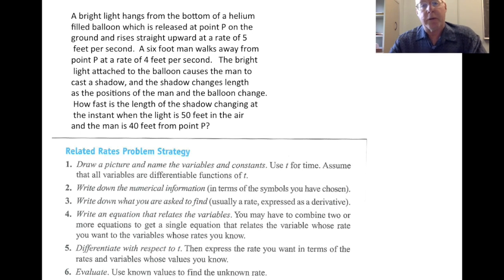So we're going to take a look at the following problem. A bright light hangs from the bottom of a helium-filled balloon, which is released at a point P on the ground and rises straight upward at a rate of 5 feet per second. A 6-foot man walks away from the point P at a rate of 4 feet per second. The bright light attached to the balloon causes the man to cast a shadow, and the shadow changes length as the positions of the man and the balloon change. How fast is the length of the shadow changing at the instant when the light is 50 feet in the air and the man is 40 feet from the point P?